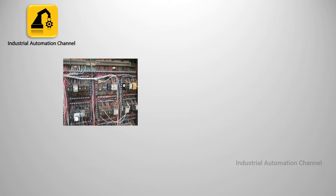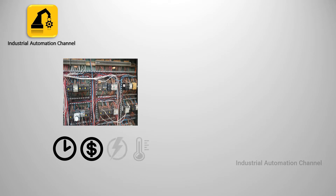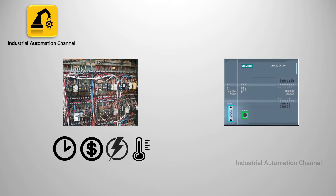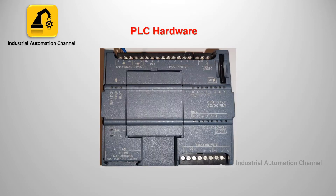Initially we used relays to turn on and off the devices. But using relays wasted time and money. A little change in any part of the circuit was complicated and led to changes in the whole system. Using relay logic had other problems such as high energy consumption and heat production. Because of these disadvantages, it was replaced with PLC. Let's talk about PLC hardware.